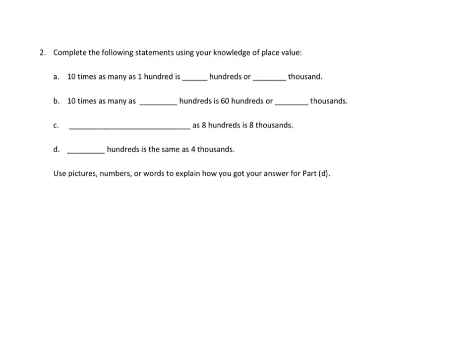Let's take a look at problem number two. Now, I'm not going to do all problem number two together, but I would like to read through it together just to see if we can get some early ideas about how we would handle this. So number two asks us to complete the following statements using your knowledge of place value. For A, it says 10 times as many as 100 is how many hundreds? Well, let's just stop right there. 10 times as many as 100 would be 10 hundreds.